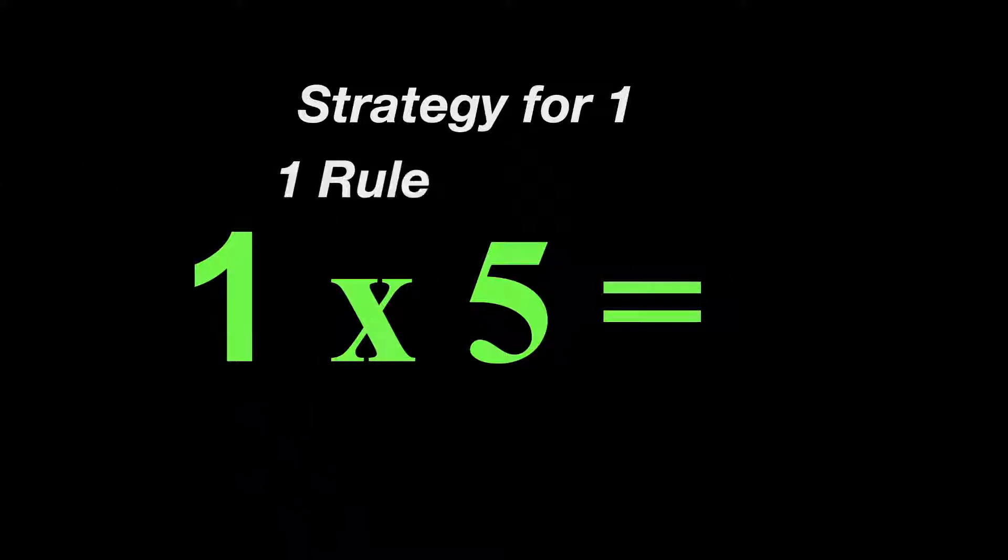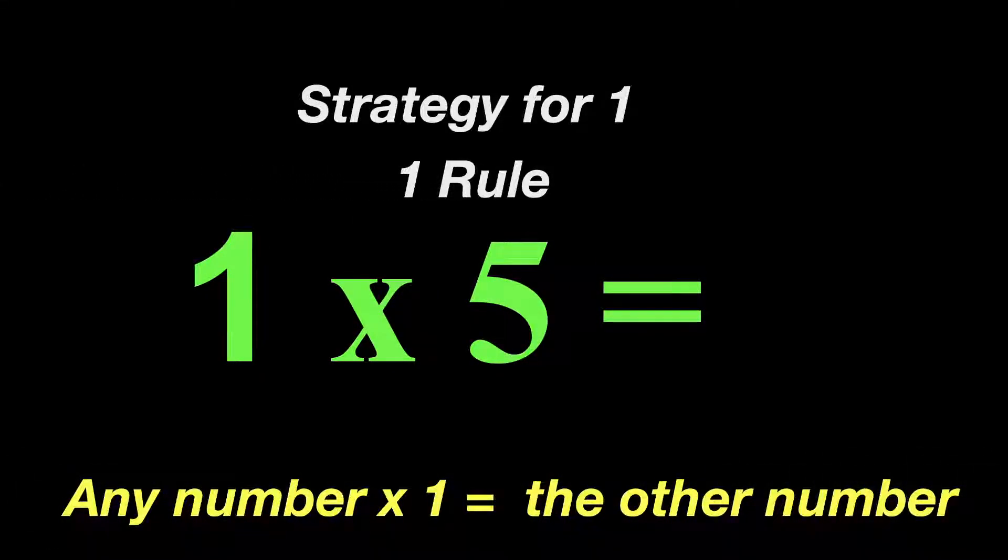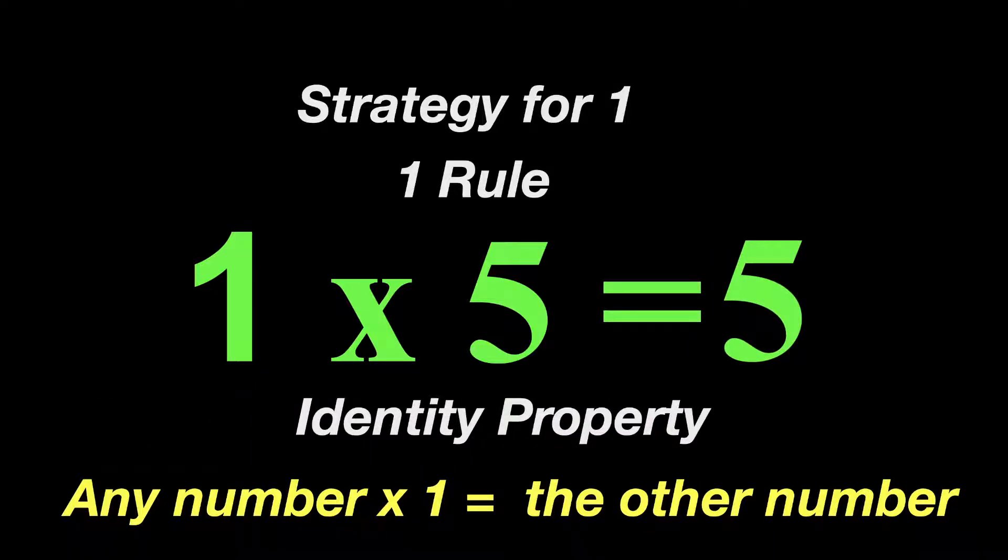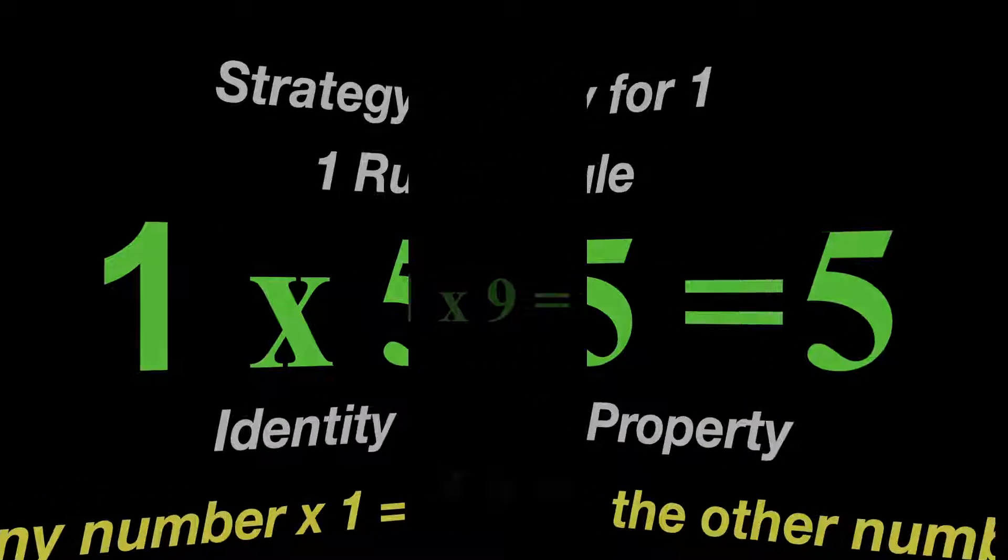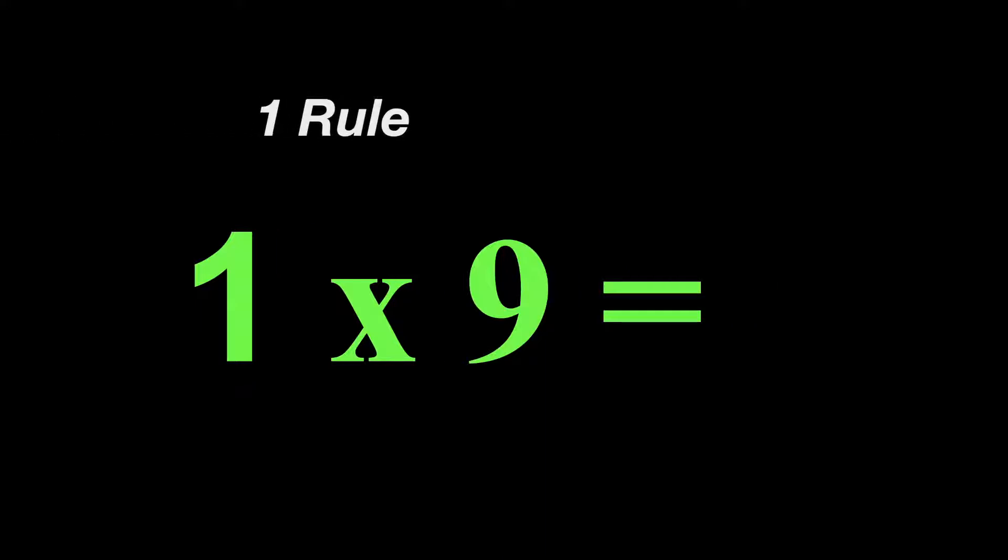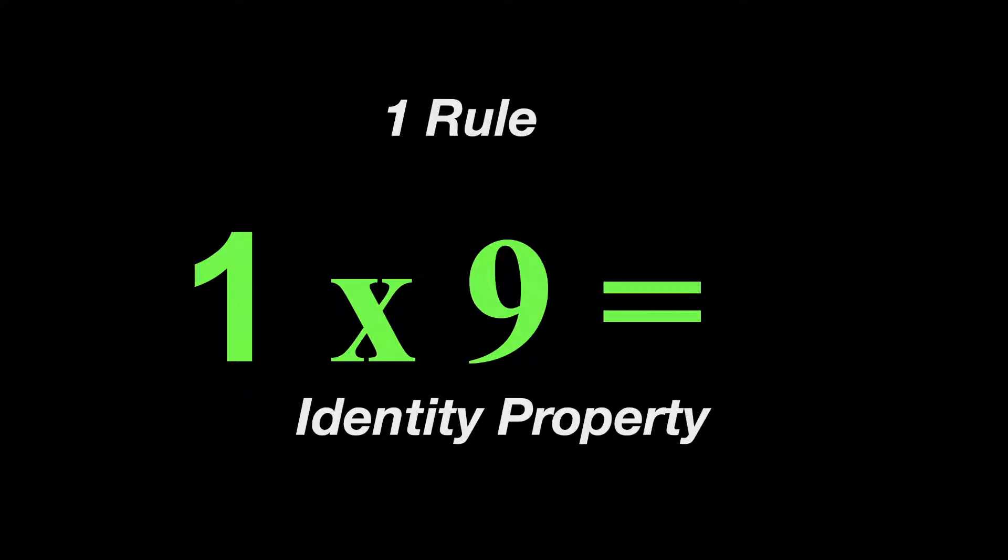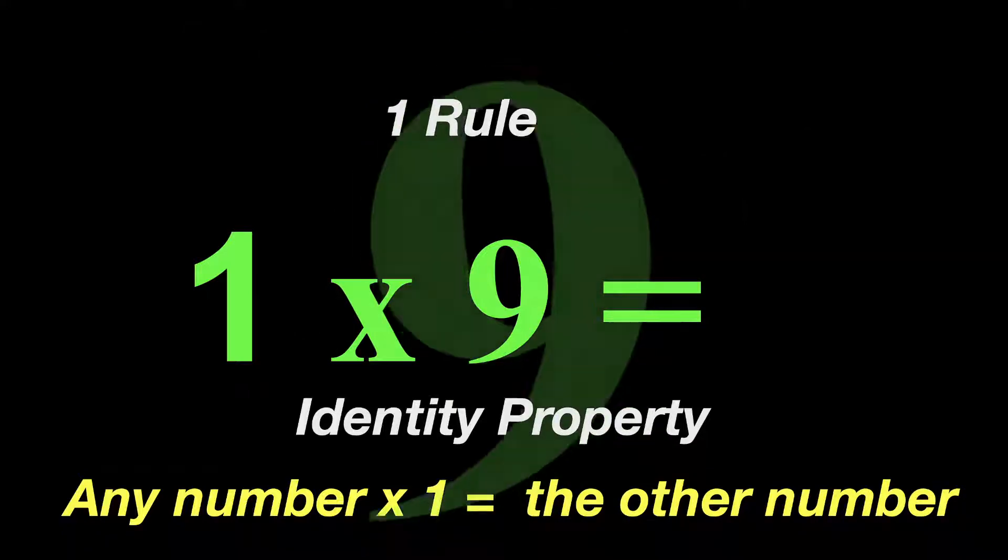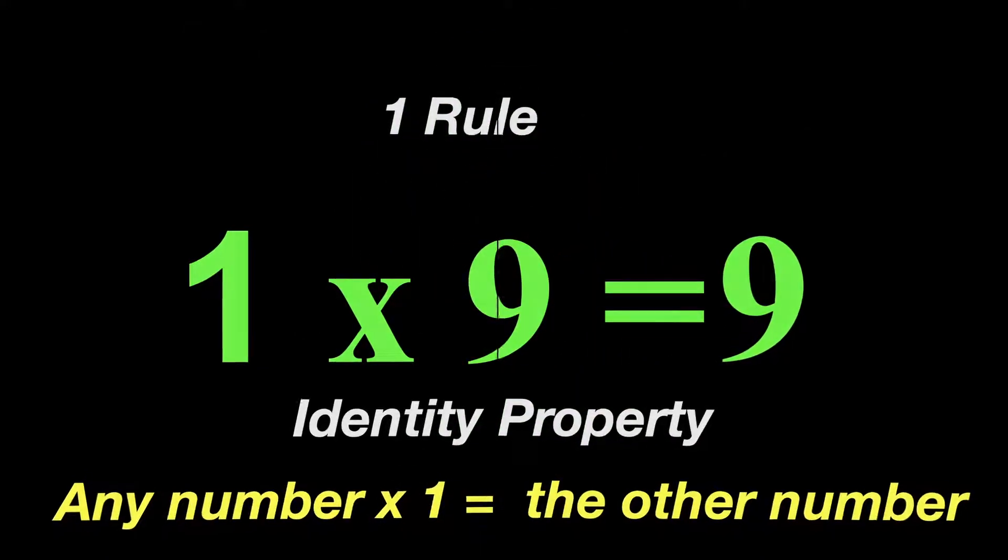Now our strategies for one is just the one rule. Any number times one is just the other number. So for example, one times five, the other number is five, so that's your answer. That's also called the identity property of multiplication, but I just like to call it the one rule, keep it simple. So one times nine, it's just the one rule or the identity property, meaning that any number times one, it's just going to be the other number. So in this case, it's nine. So one times nine is nine.